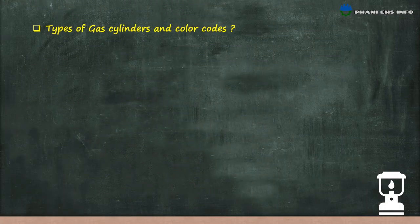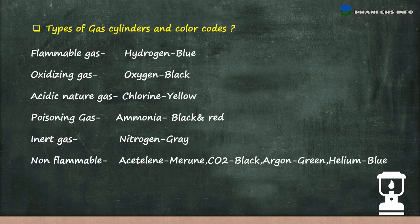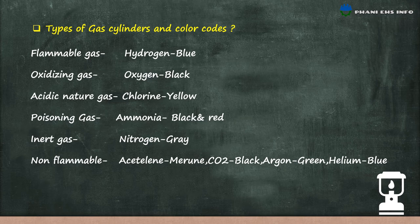Types of gas cylinders and color codes: flammable gas — hydrogen in blue color; oxidizing gas — oxygen in black color; acidic nature gas — chlorine in yellow color; poisonous gas — ammonia in black and red color; inert gas — nitrogen in gray color; non-flammable — acetylene in maroon color; carbon dioxide in black color; argon in green color; and helium in blue color.